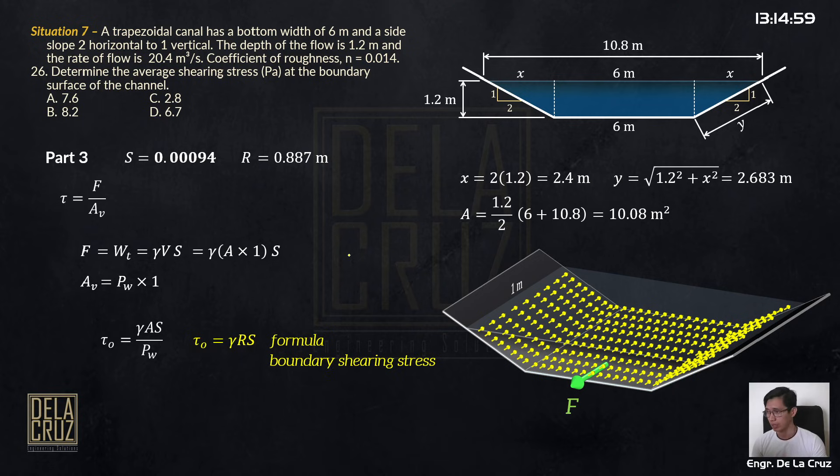So we have this. We got this earlier. Gamma of water, 9810 Newtons per cubic meter is what I used. Our R is 0.887 and the slope is 0.00094. What comes out here is 8.179 Pascal. So 8.2 Pascal.